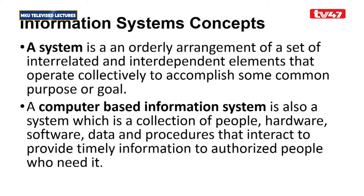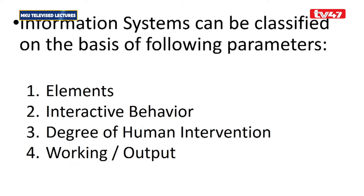Reviewing some information system concepts: a system is an orderly arrangement of interrelated, interdependent components that work together collectively to achieve a common purpose. A computer-based information system is a collection of people, hardware, software, data, and procedures used to do business processes and provide information to those within the organization who need it.